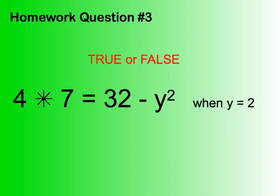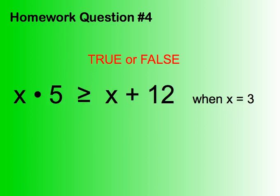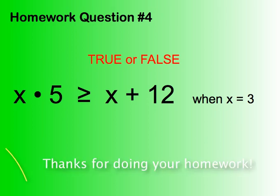Here is homework question number 3. It is a true or false — you are plugging in 2 for y and deciding whether the statement is true or false. And homework question number 4 is also a true or false. Your variable is x and the value for x is 3, so you're plugging in 3 for x and deciding whether the statement is true or false.